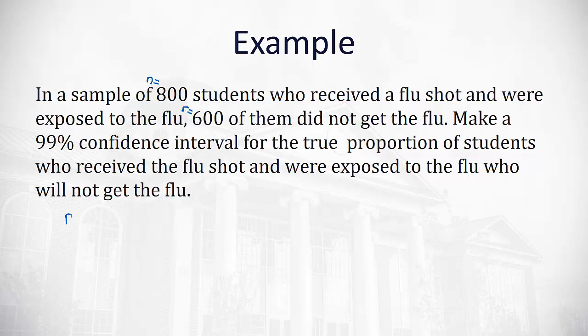So first we need to know what is our sample proportion, our p hat. That is equal to our r divided by n, the number of successes, 600, divided by the possibilities of 800. That's going to come up to 0.75. Our p hat is 0.75.